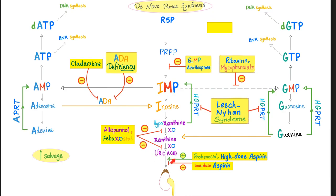Once you have uric acid, we have other options. We can increase the secretion of uric acid in the kidney to get rid of it quickly. There is a drug called probenecid, or you can use high-dose aspirin. Low-dose aspirin will inhibit the excretion of uric acid in the kidney, leading to increased serum uric acid levels. There is a problem with probenecid: when you excrete lots of uric acid in the kidney, there is an increased risk of uric acid kidney stones, which is why patients who take probenecid usually have to drink more than 4 liters of water per day.